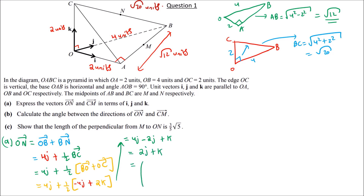In column form, vector ON equals (0, 2, 1).